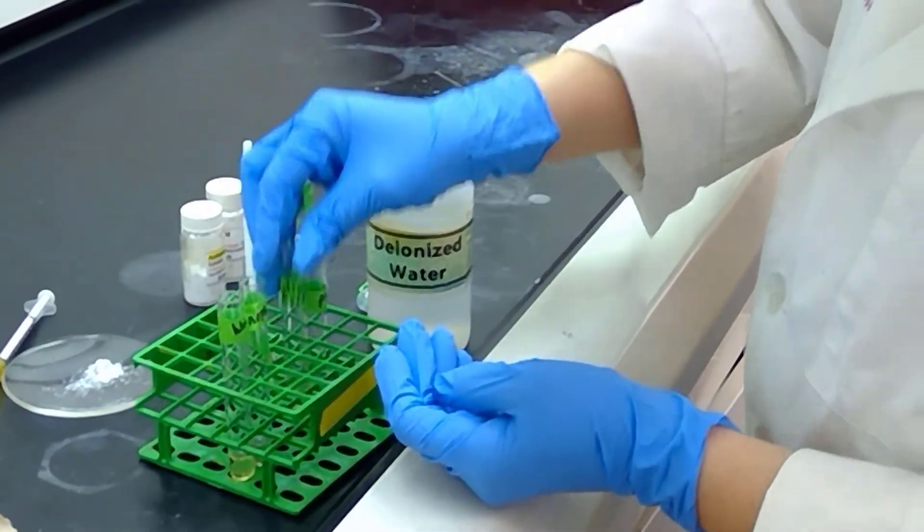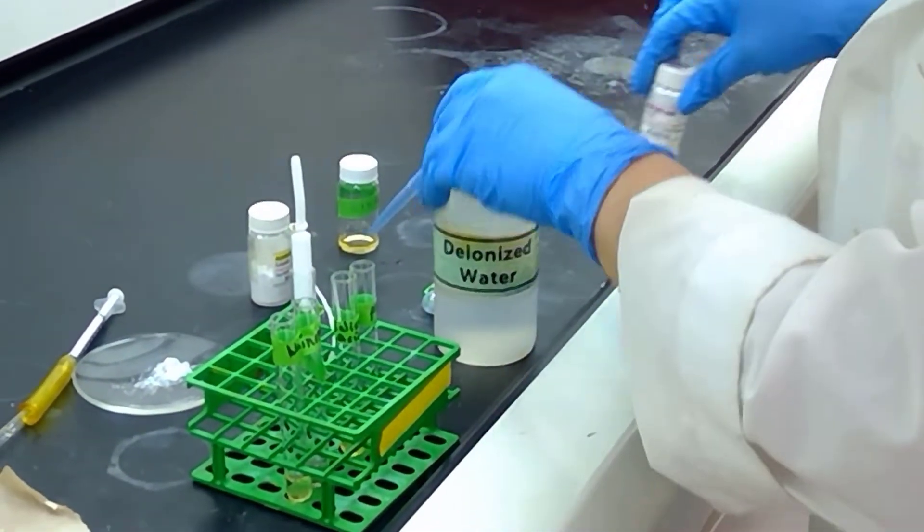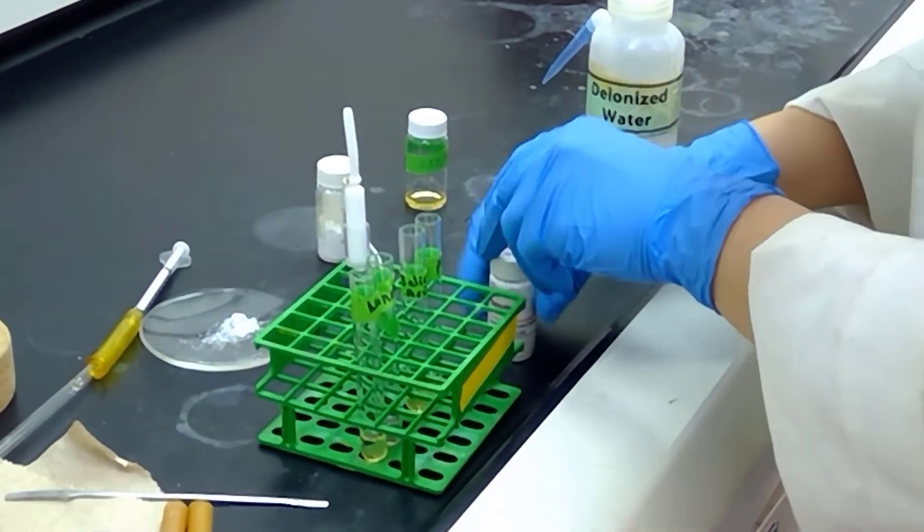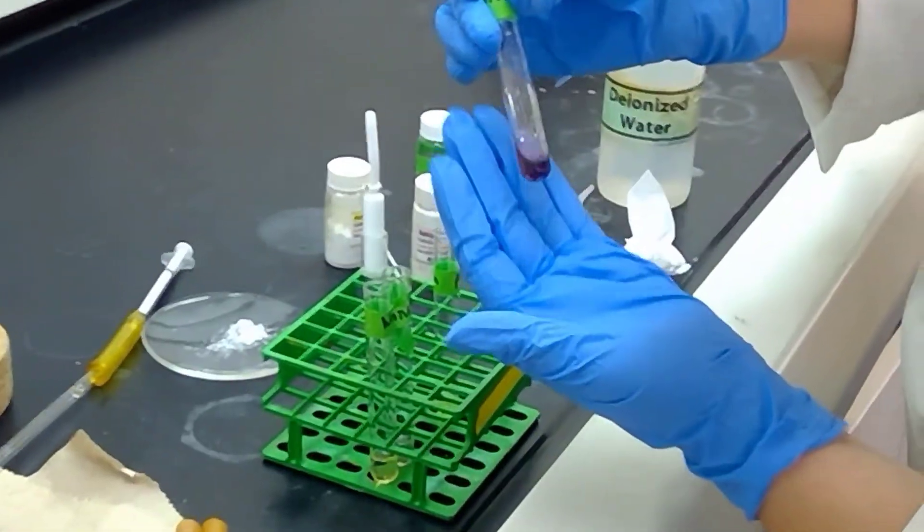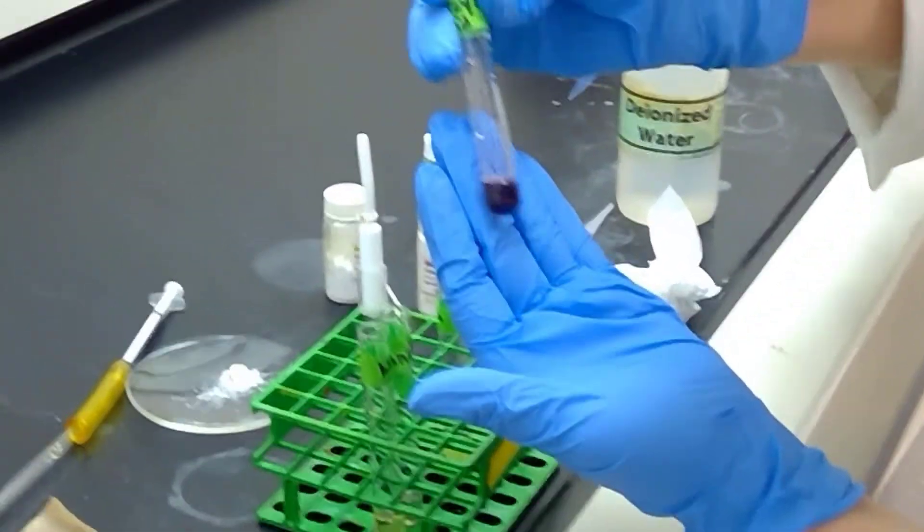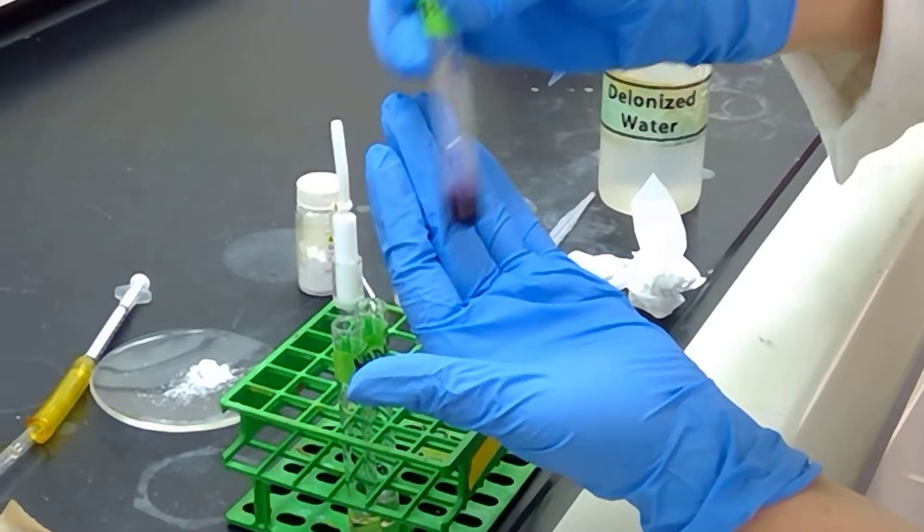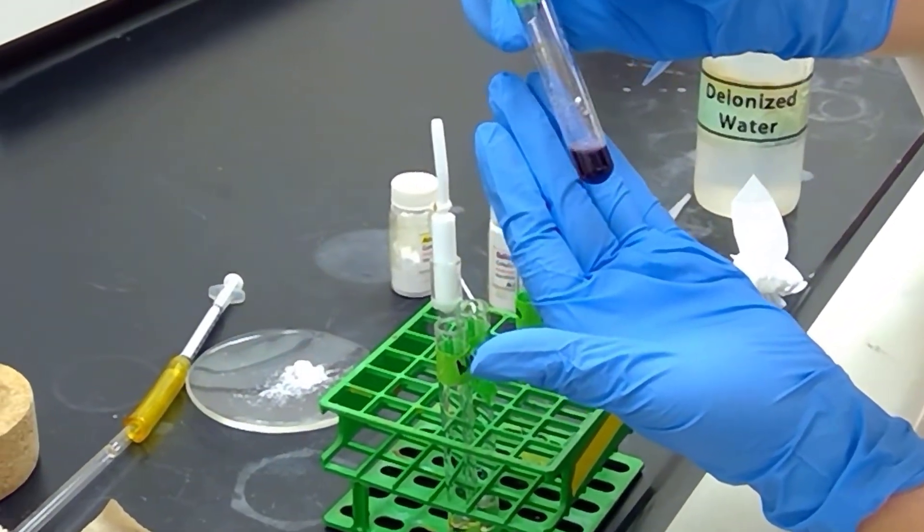Our next compound is salicylic acid. This is also a phenol compound, so again I'm going to add a small sample to the test tube. If you notice here, salicylic acid is producing a very, very dark red, almost purple color.